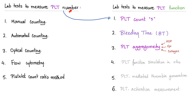In the lab: platelet number can be assessed by manual counting, automated analyzer counting, optical counting, flow cytometry, or the platelet count ratio method. To measure platelet function, you need platelet number first, plus bleeding time, platelet aggregometry — where you add an agonist such as ADP, epinephrine, or collagen — platelet function simulation in vitro, platelet mediator thrombin generation, and platelet activation measurement.